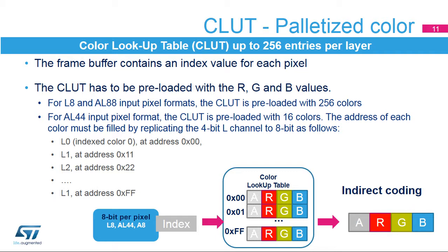The frame buffer contains an index value for each pixel. The CLUT has to be loaded with the R, G, and B values that will replace the original RGB values of that pixel, or indexed color. Each color RGB value has its own address, which is the position within the CLUT.